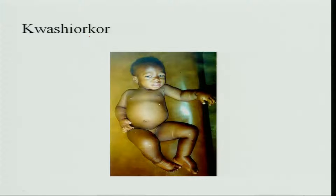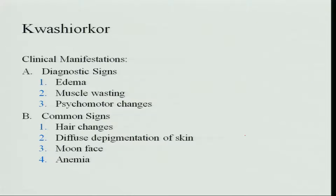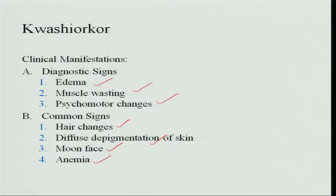The kwashiorkor child can look like a normal child, making it very difficult to assess without diagnostic testing. There is edema, and muscle wasting is covered by the edema so it is not visibly apparent. There are psychomotor changes and common signs like hair changes — hair becomes brown in color — diffuse depigmentation of the skin, a moon face due to edema, and anemia which is detected only through blood testing.